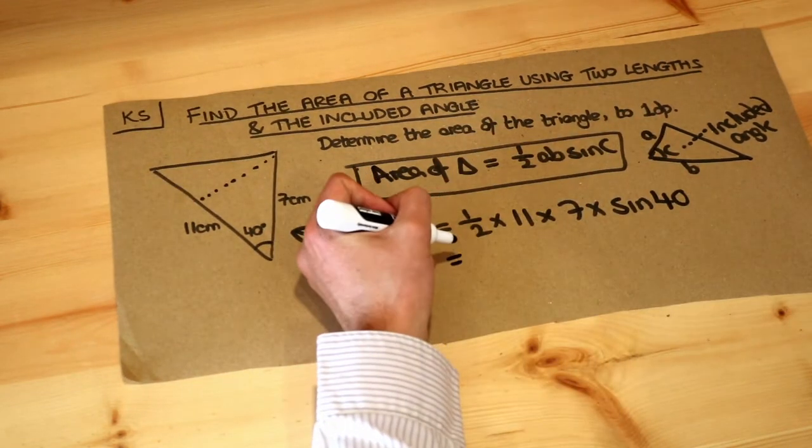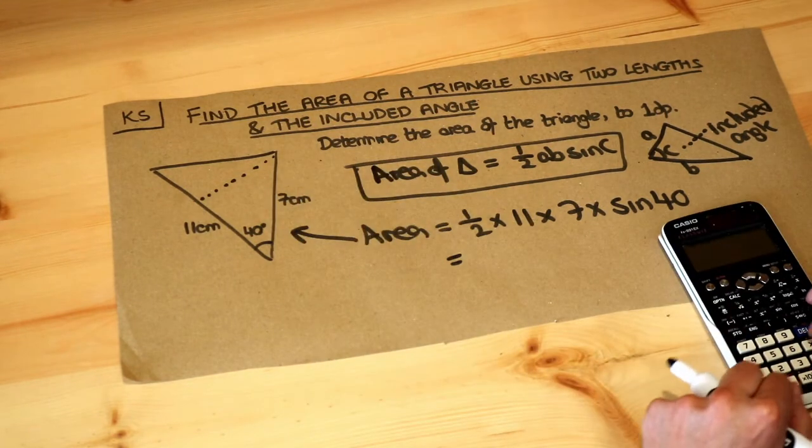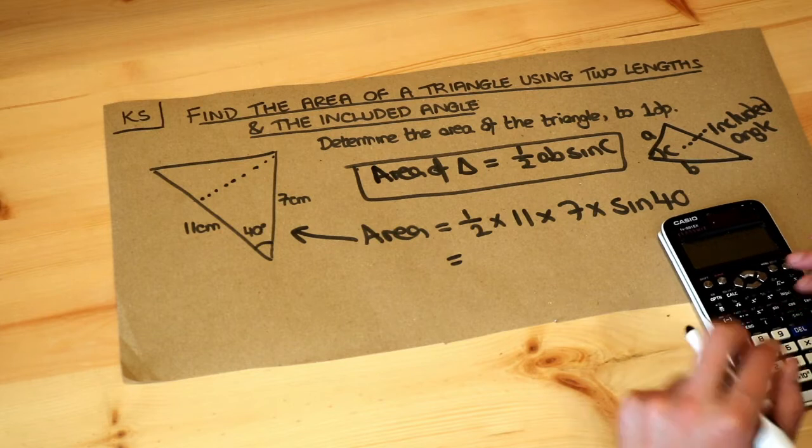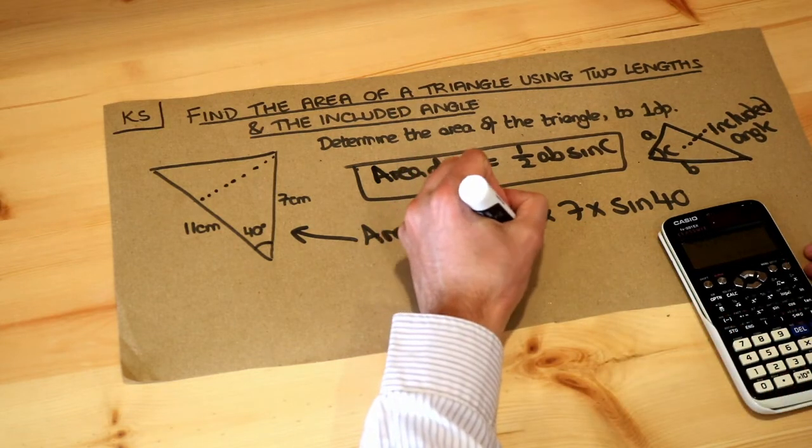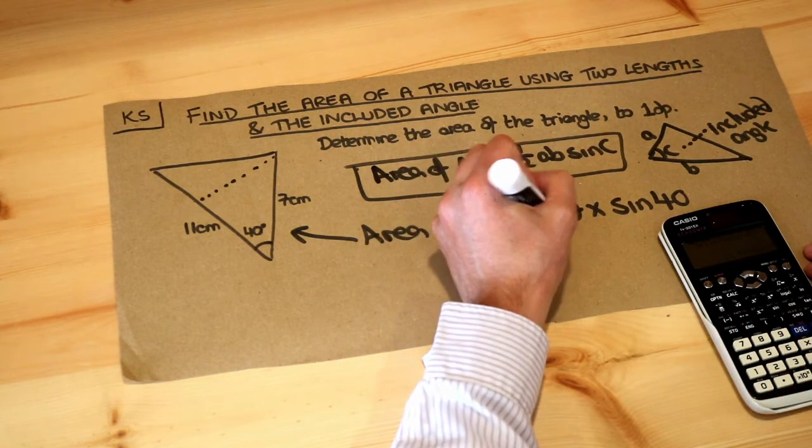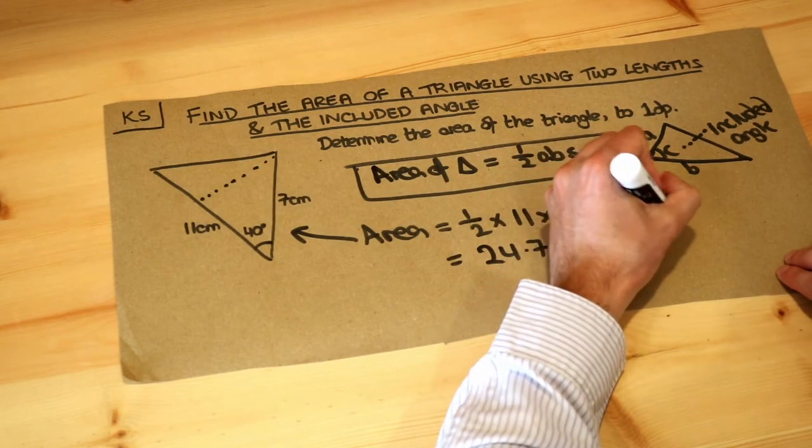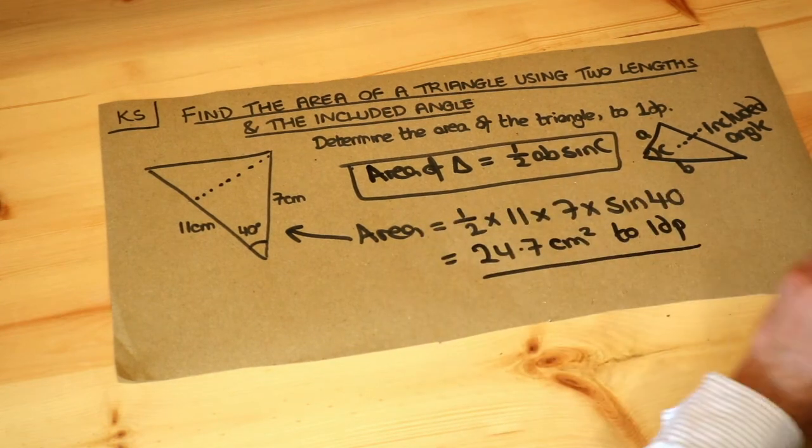So if we just put that one into our calculator, making sure your calculator is in degrees mode, that gives you an answer of 24.7. And what's the unit? It's going to be centimeters squared because it's an area, and that was to one decimal place. That's the final answer.